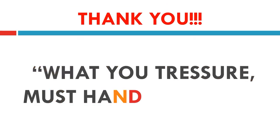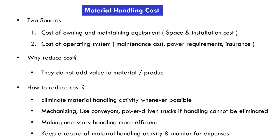Thank you. What you treasure, you must handle with care. The appendix covers material handling costs including: cost of owning and maintaining equipment such as space and installation cost, and cost of operating the system including maintenance cost, power requirements, and insurance. Costs do not add value to materials or products. To reduce cost: eliminate material handling activity whenever possible, mechanize by using conveyors or power-driven trucks if handling cannot be eliminated, make necessary handling more efficient, and keep a record of material handling activity and monitor for expenses.